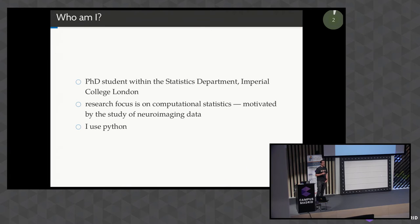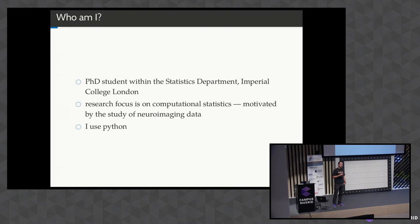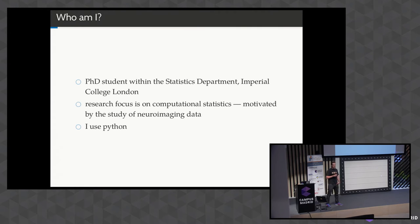Before I start, a few words about myself. I'm a statistician and I'm about to finish my PhD at Imperial College London. My research focuses mostly on computational statistics, and my research is driven mostly by applications in neuroscience. In particular, I do a lot of work with functional MRI, which is basically putting someone in a scanner and measuring blood flow in the brain as a proxy for brain activity. I use Python, which is why I'm here.